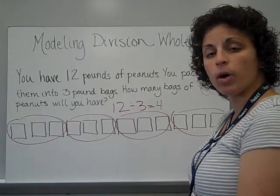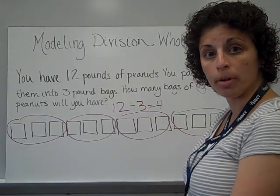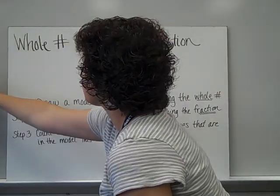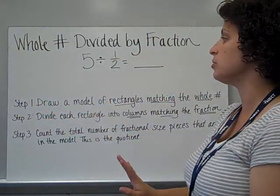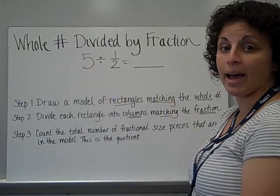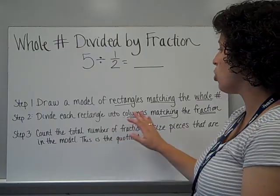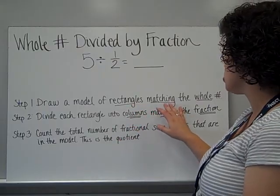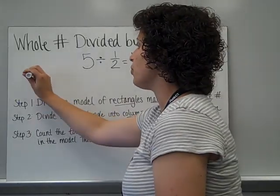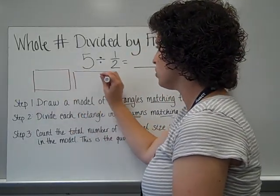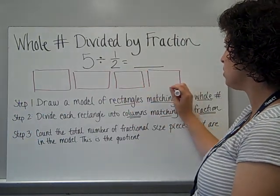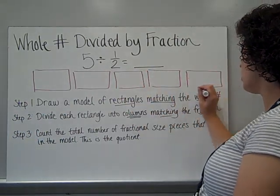This kind of model is what we're going to use to divide a whole number by a fraction. Our problem is going to be 5 divided by 1 half. Our first step is to draw rectangles to match the whole number. So my whole number is 5, so I need 5 whole rectangles.